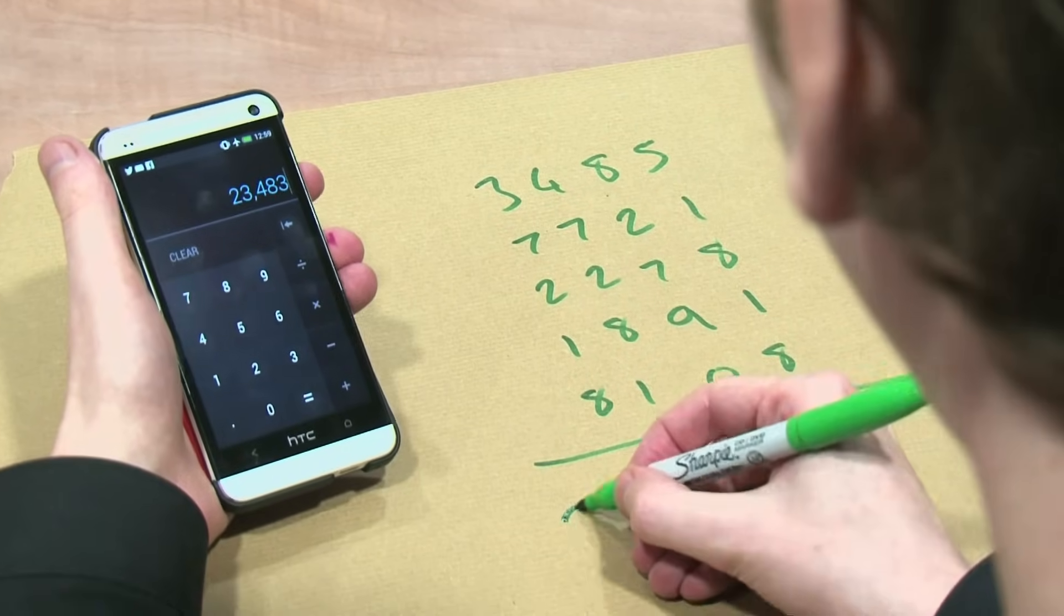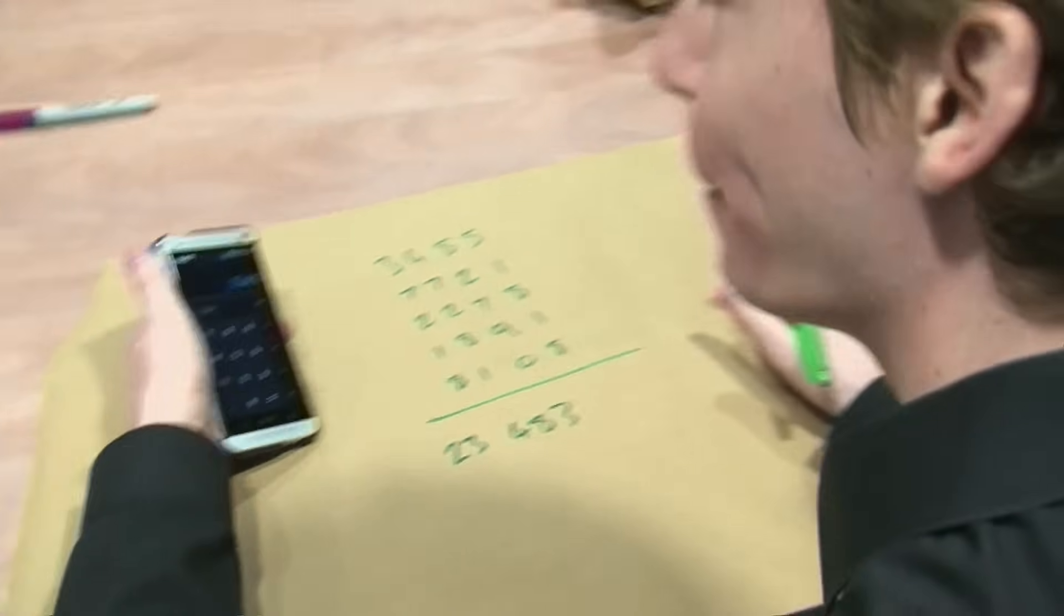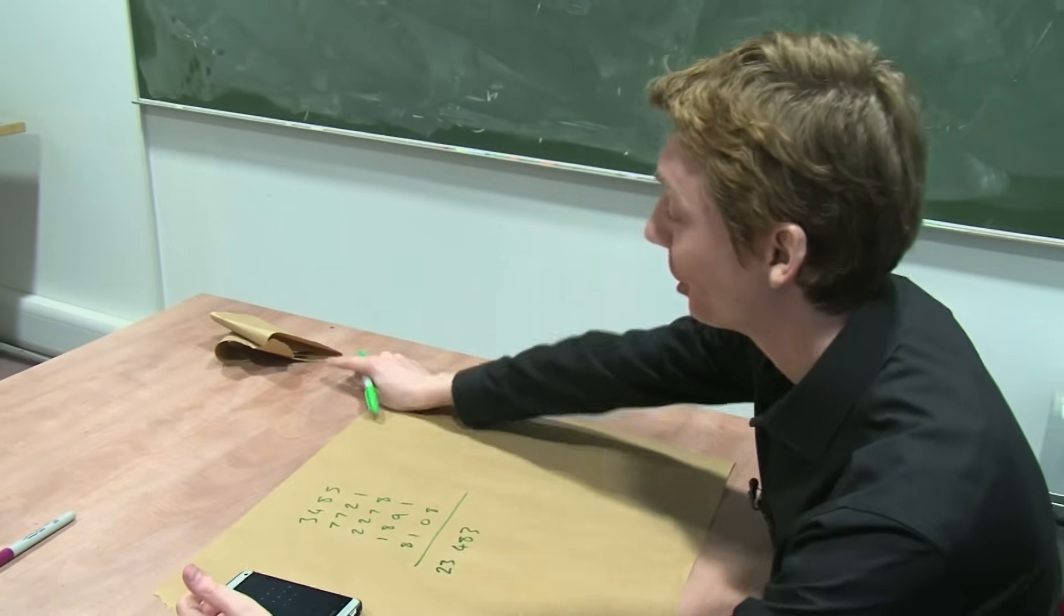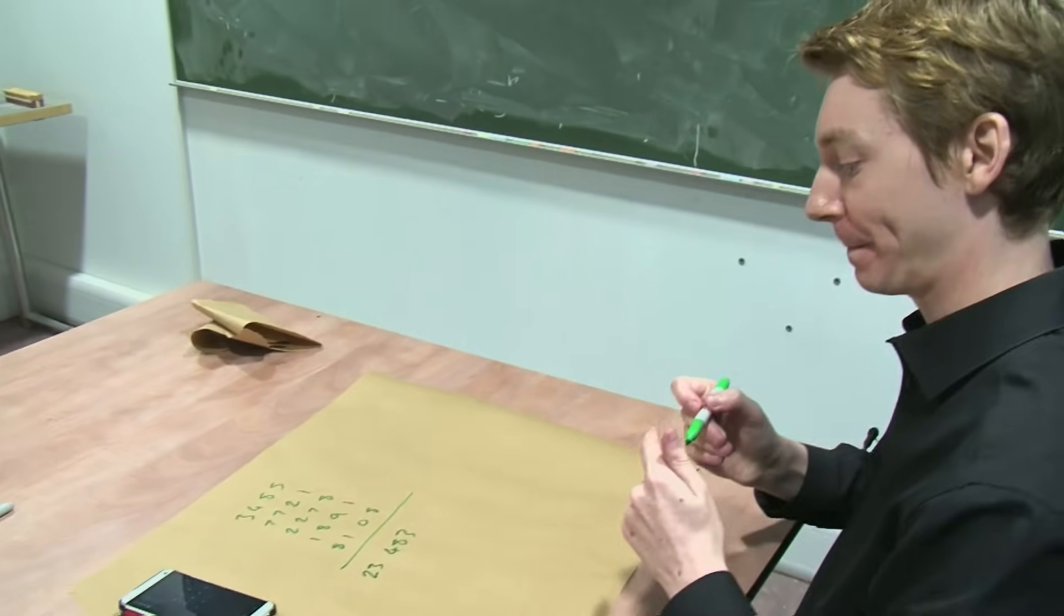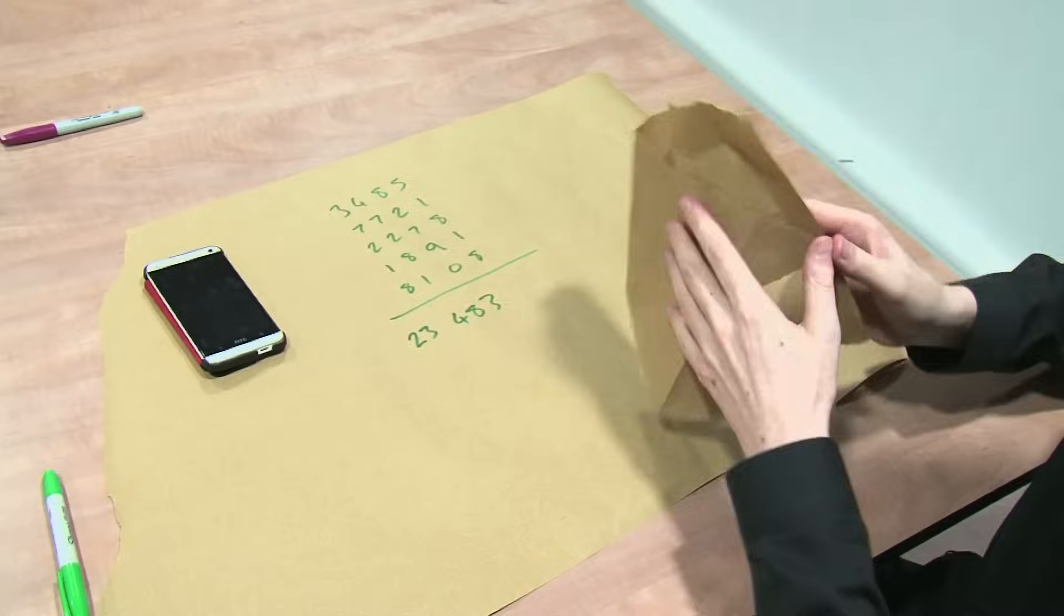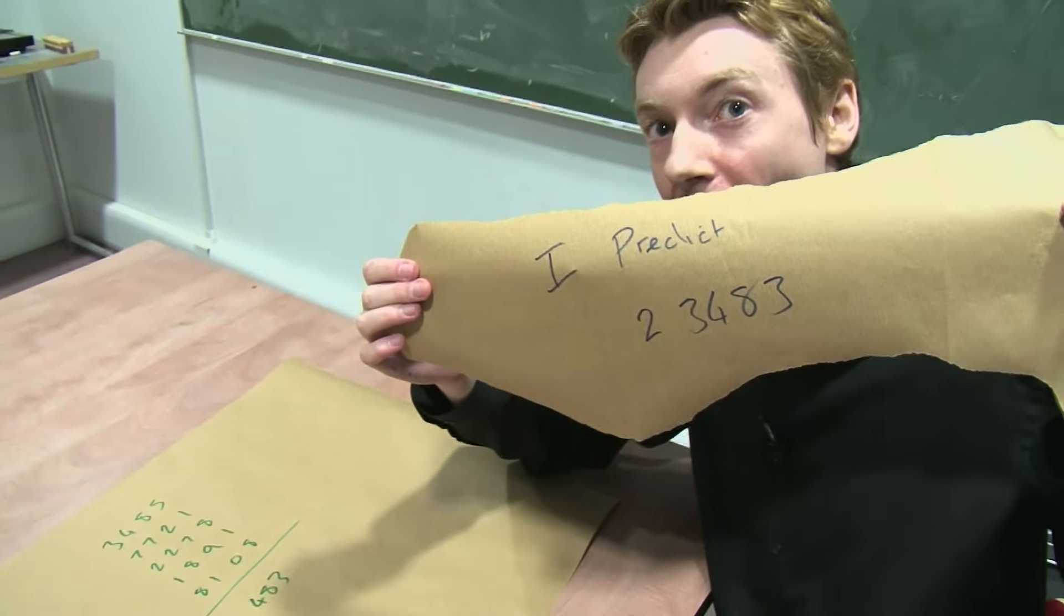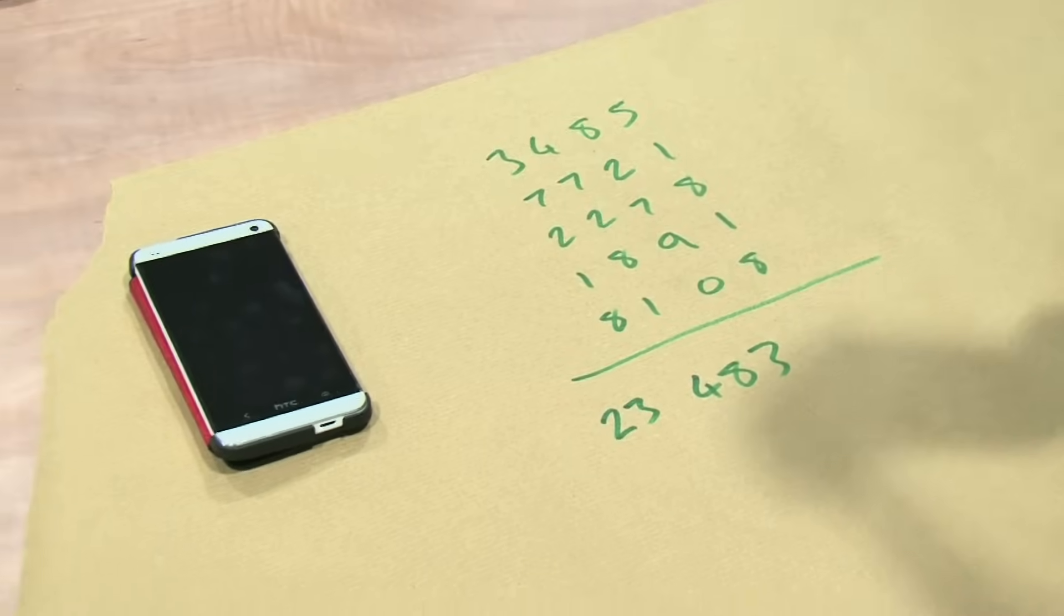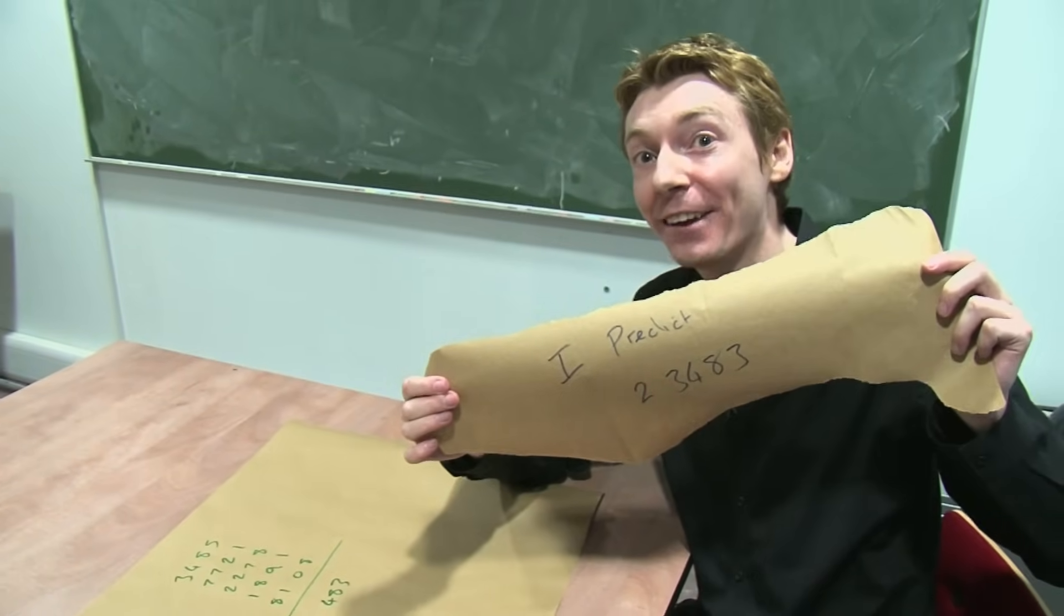OK. So the answer is, the final answer is 23,483. Now, before I started the trick, I made a prediction on that strip of brown paper. Let's have a look. Let's have a look at my prediction. If I open up my prediction, it says, I predict 23,483. And then I think what you're meant to say here is, ta-da!